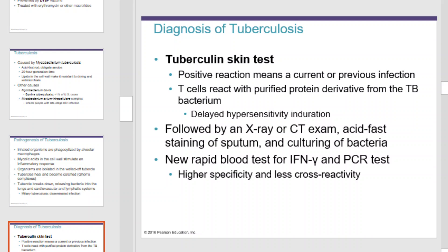Diagnosis of tuberculosis is usually done with a tuberculin skin test. A positive reaction means a current or previous infection. T cells react with purified protein derivative from a TB bacterium, and patients will show a delayed hypersensitivity. Tuberculosis can also be diagnosed by X-ray or CT exam, acid-fast staining of sputum, and culturing of bacteria.